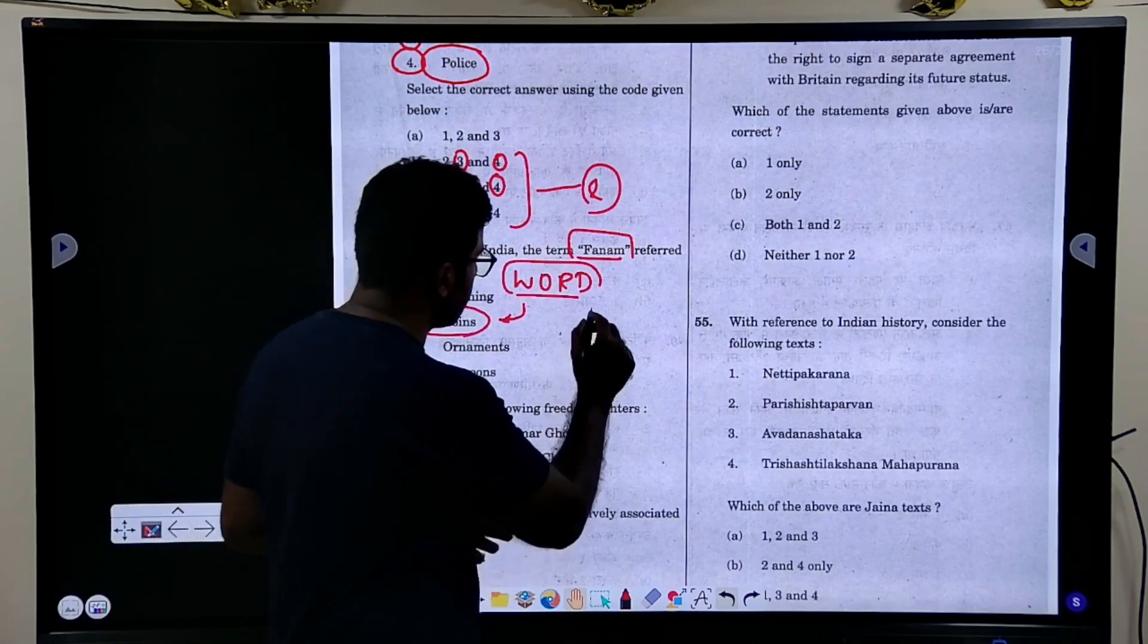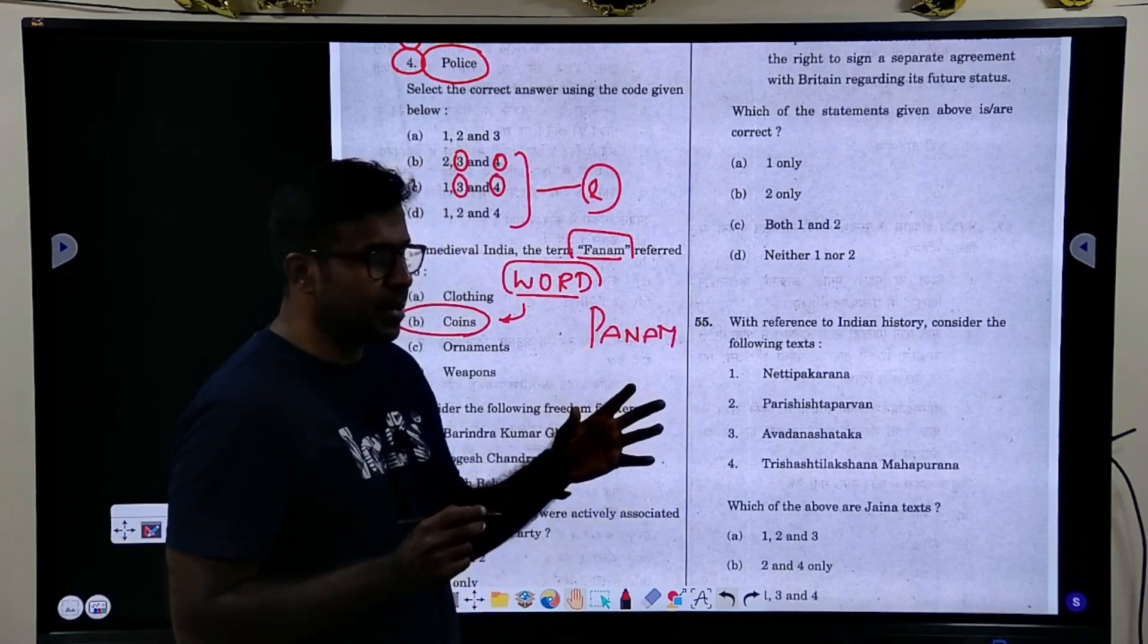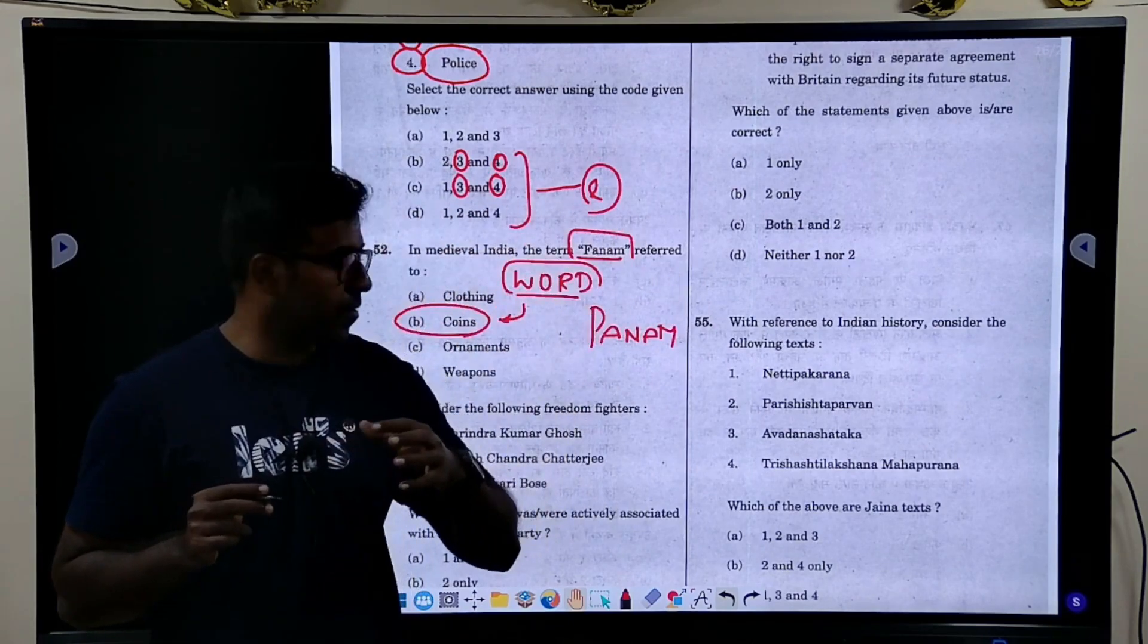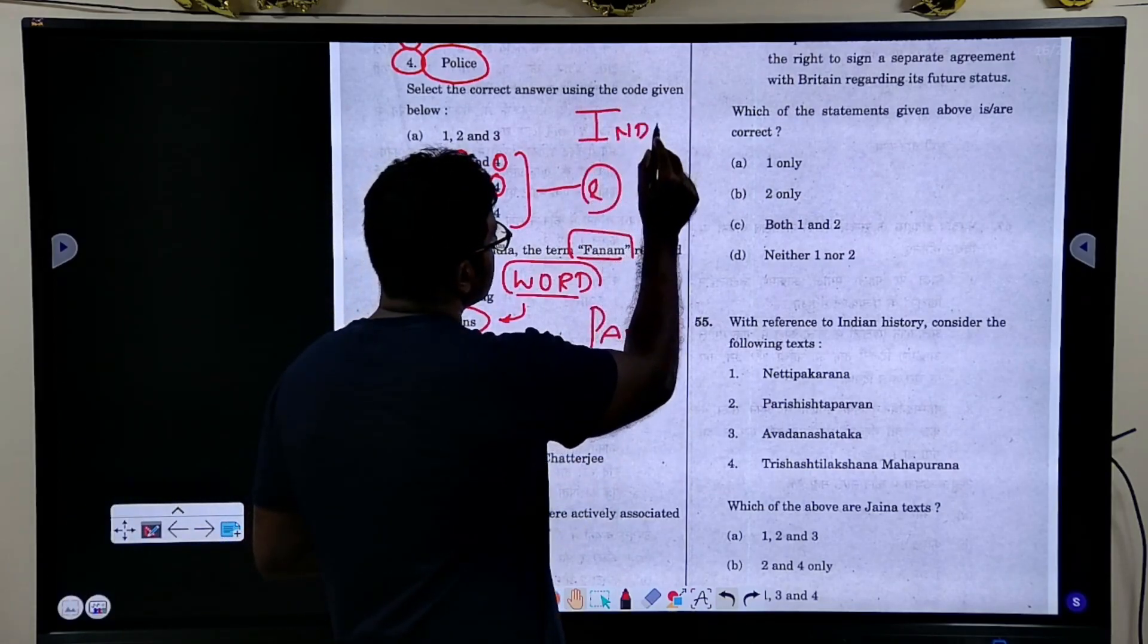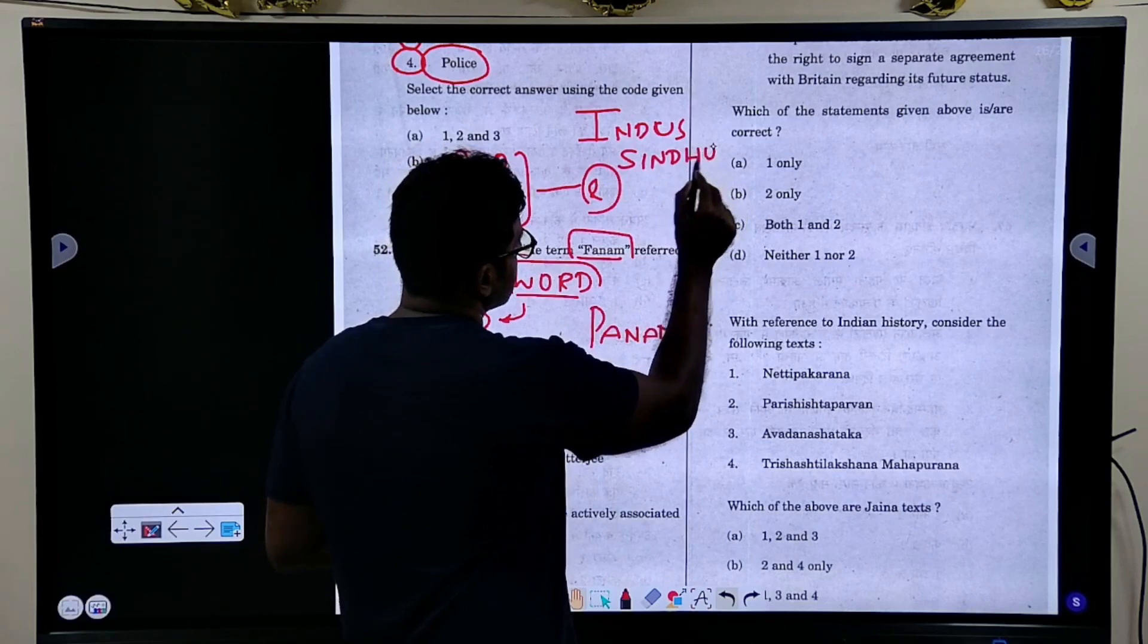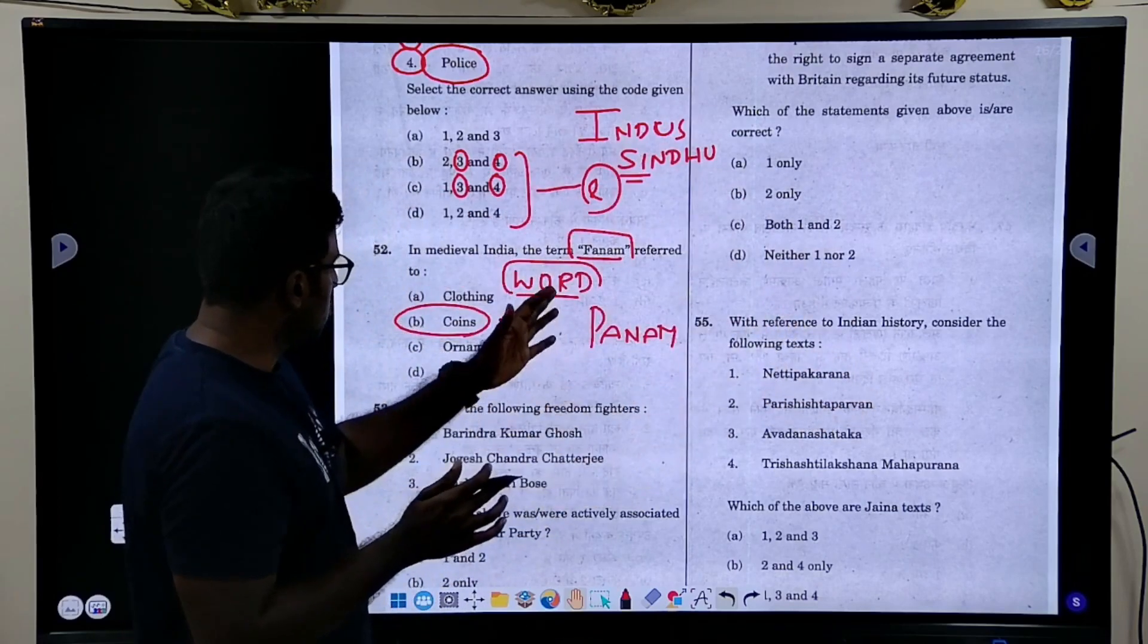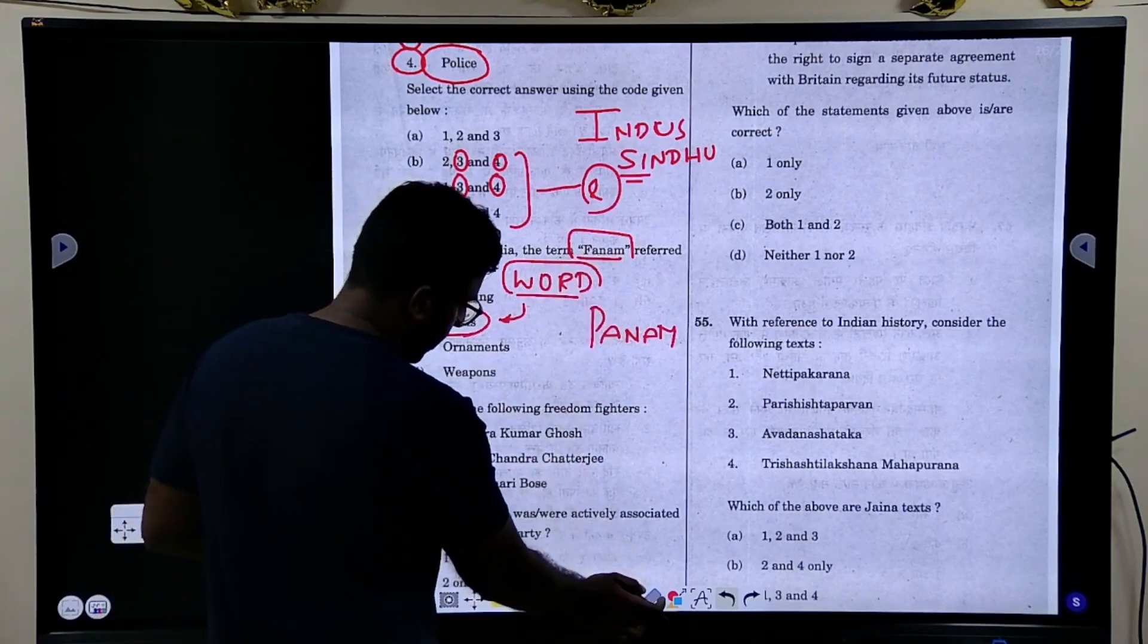Then you see this again. FUNAM. UPSC has this concept of word logic. Word logic is one of the wonderful questions or wonderful logic that you should use in civil services. Word logic says this is the answer - coins, because it is FUNAM. In medieval India, the language from Persia was influencing a lot in India. This transformation of one word in one country gets transformed in another country. FUNAM or PUNAM, it is then transformed. That is what is coins.